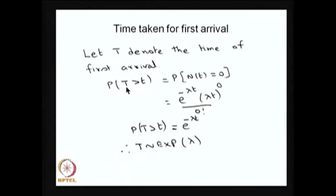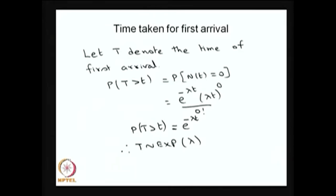The first arrival occurring after time t means that no arrival has taken place up to time t. So the two events are equivalent: P(T > t) = P(N(t) = 0). N(t) = 0 means no event took place till time t, which is equivalent to saying the first arrival occurs after t. We do not know the distribution of T, but we know P(N(t) = 0), so we use this relation.